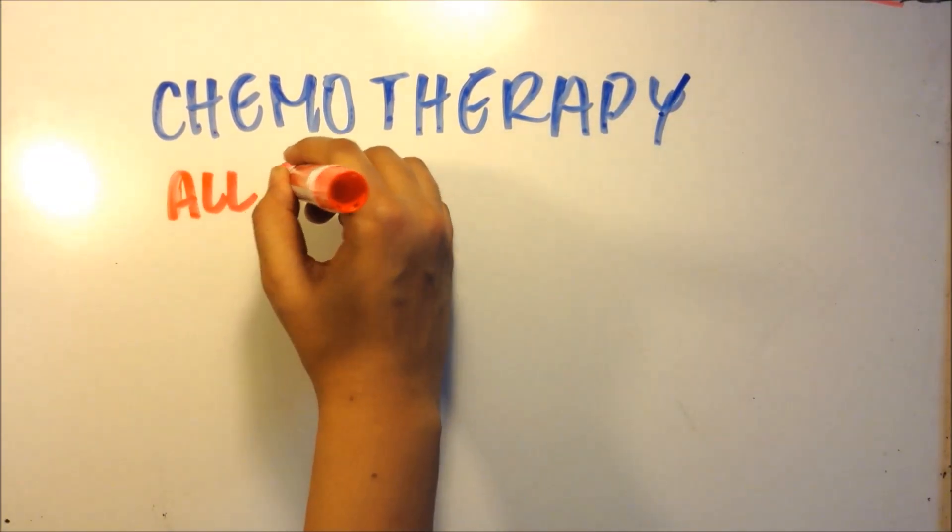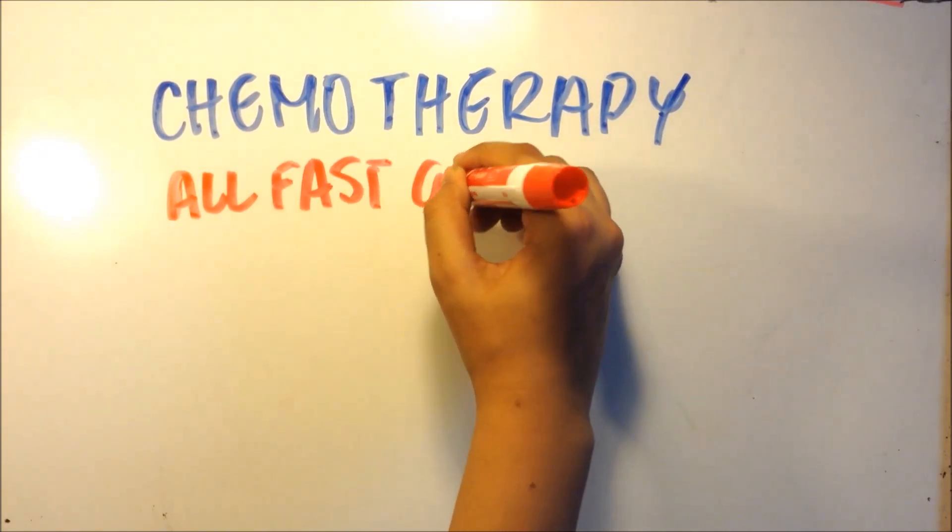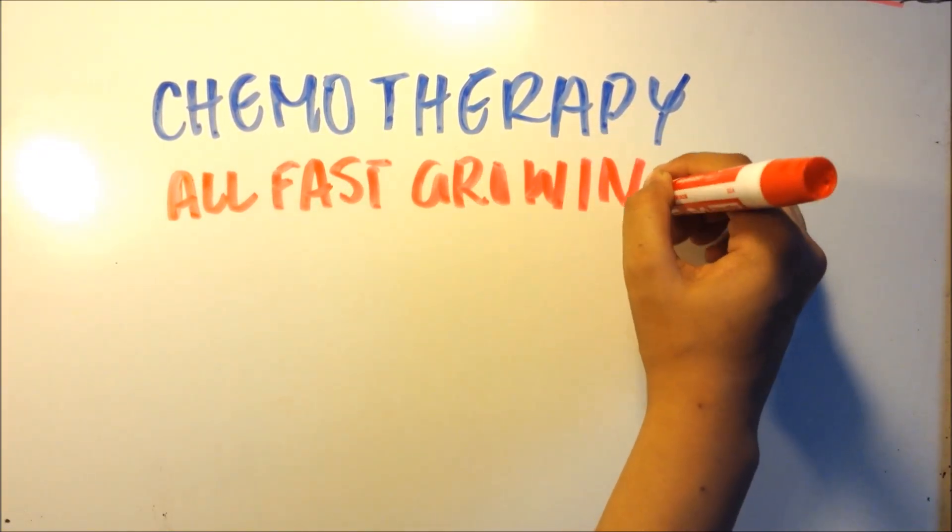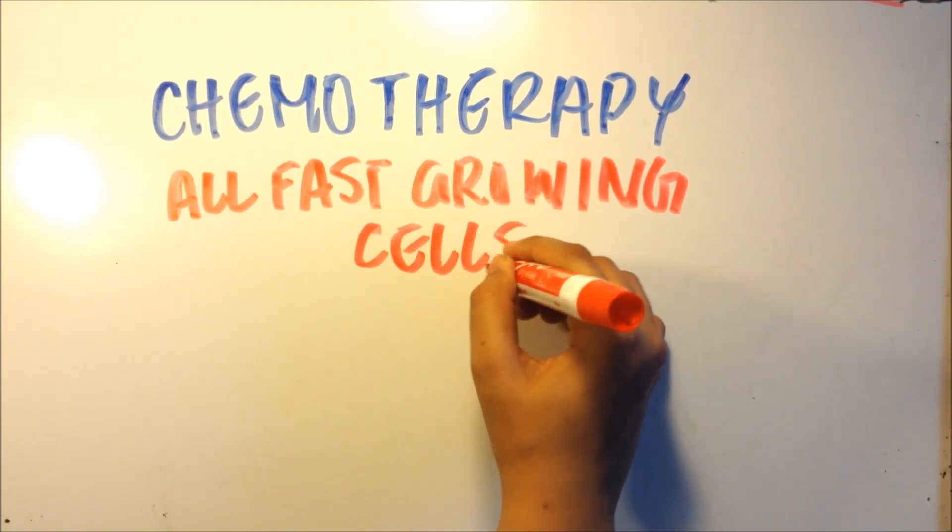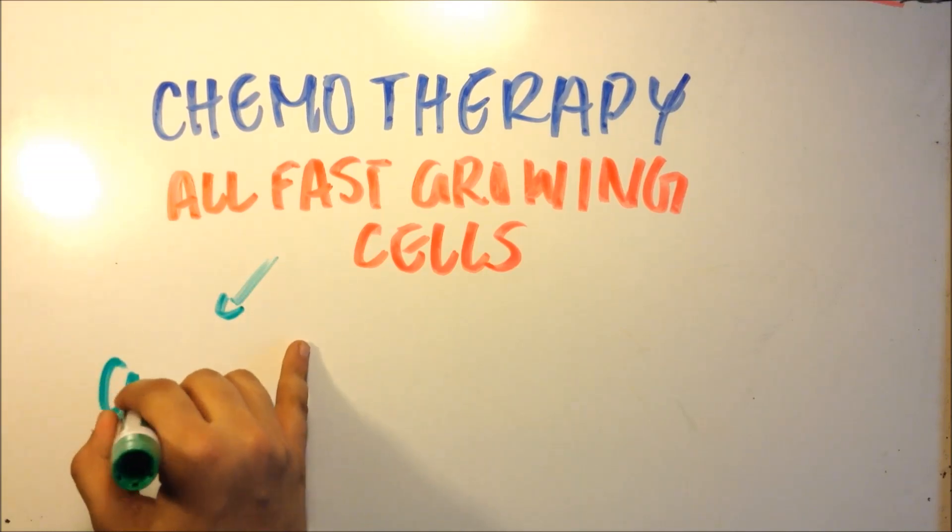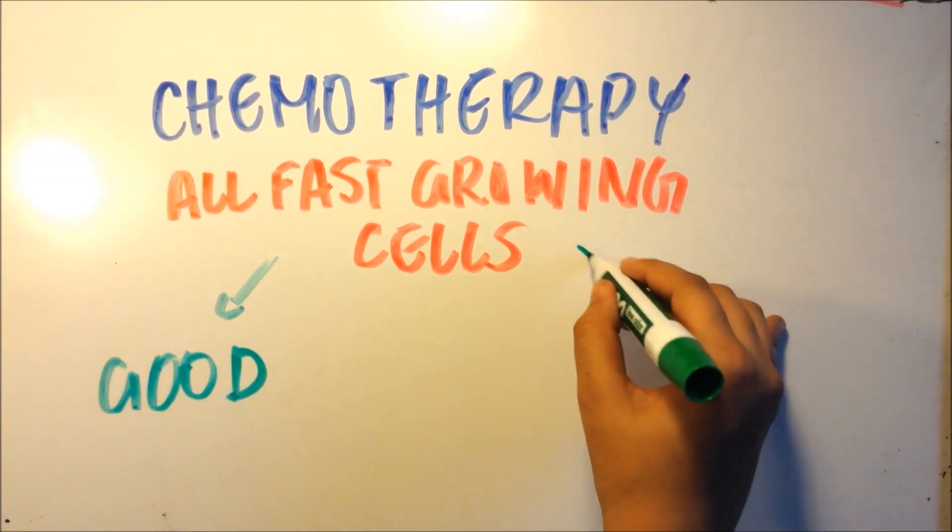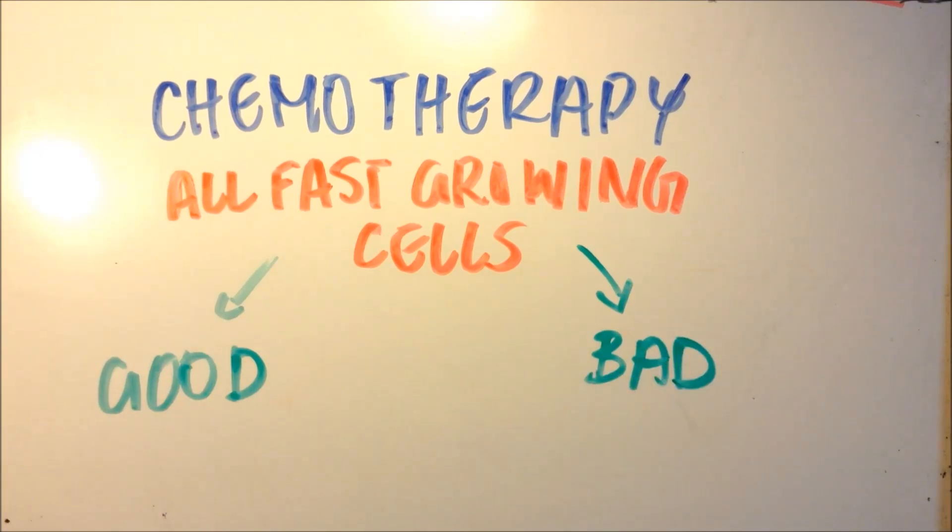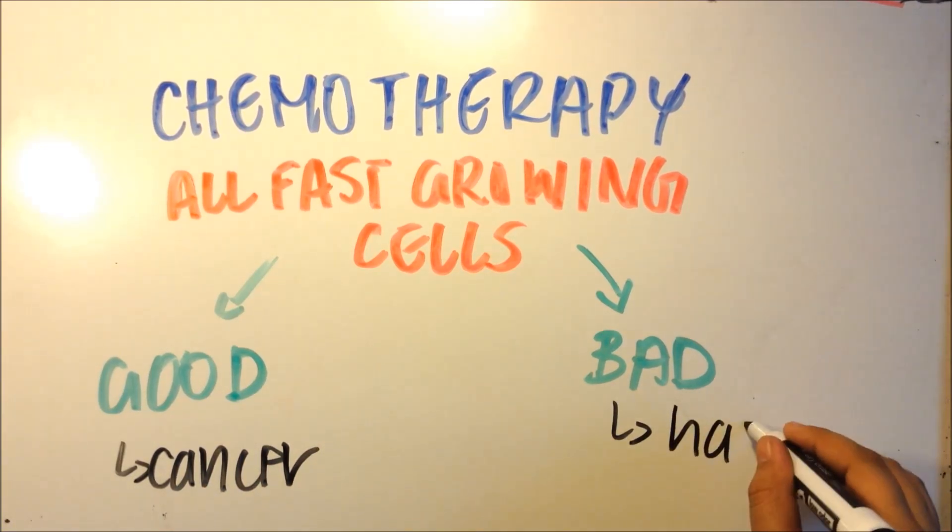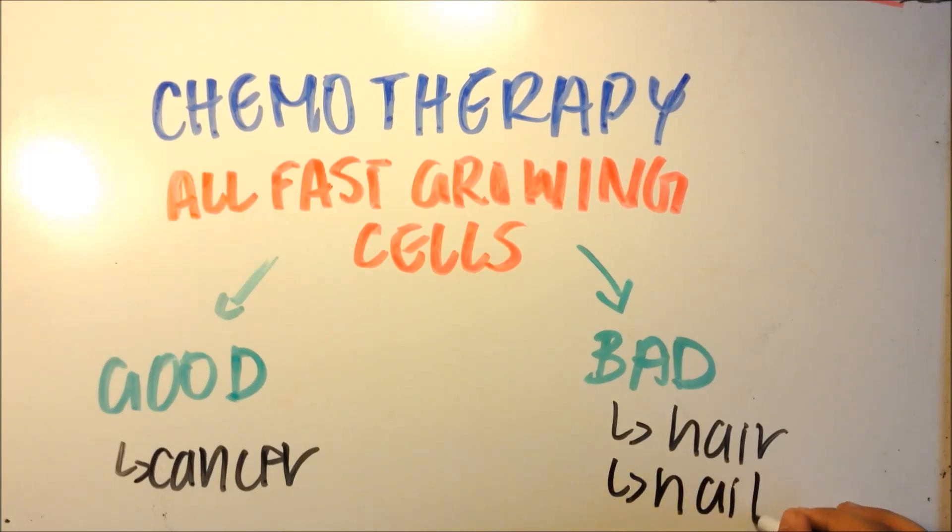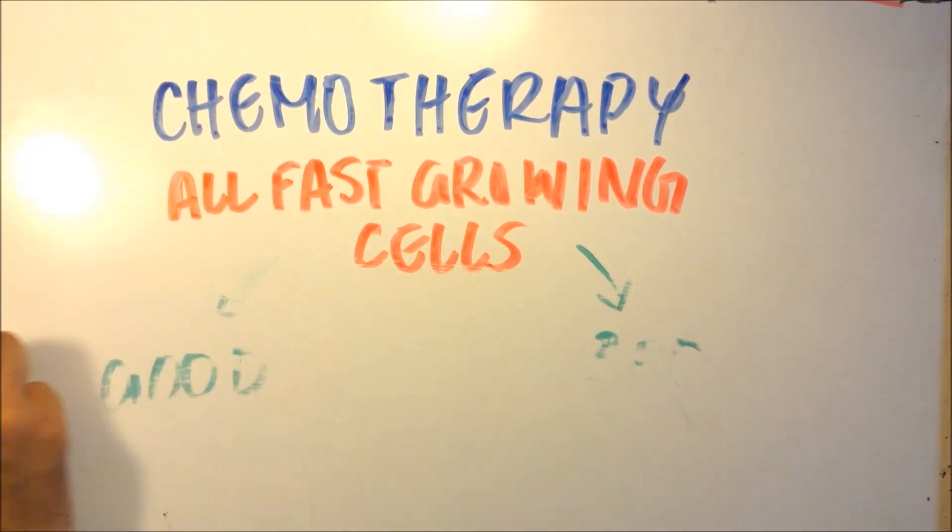Chemotherapy targets all fast-growing cells. Why? Because cancer consists of different fast-growing cells which cause tumors. This can be good and bad. It's good because it targets cancer cells, but it's bad because it targets hair, nails, any fast-growing cell in your body, even the good ones. It's not selective of only cancer cells. Also, chemotherapy radiation and drugs have harmful effects on your body.